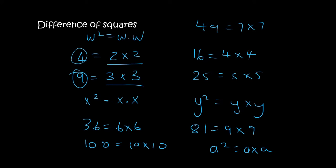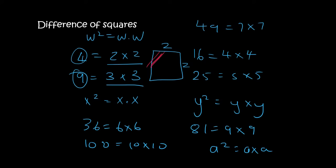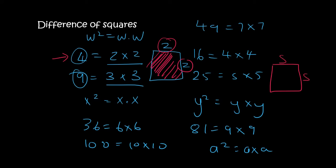Why do we even call them squares? Here's a little side note: imagine you have a square where each side length is 2 — the area would be 2 times 2, which gives you 4. If we had another square where each side is 5, the area would be 5 times 5, which is 25. That's why we call them square numbers — that's just a side note.